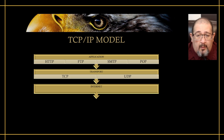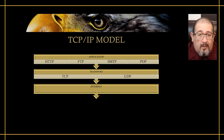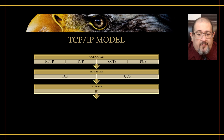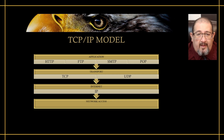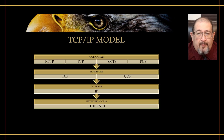The next protocol — instead of calling it the network layer, we call it the internet layer. Here, we only have one protocol, which is known as the internet protocol, or IP. Finally, we combine the data link and physical layers together and create the network access layer. Here, the protocol that you might be familiar with is the Ethernet protocol.